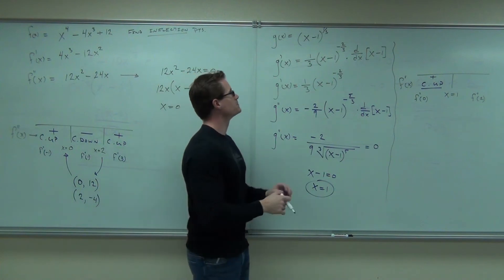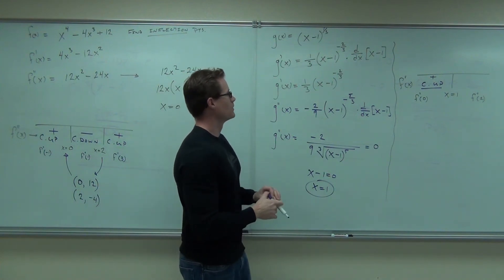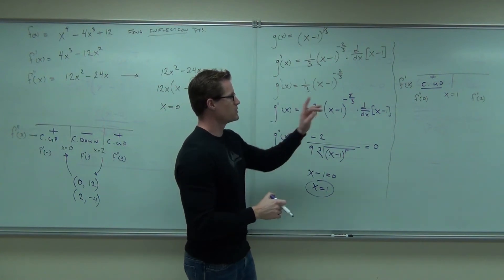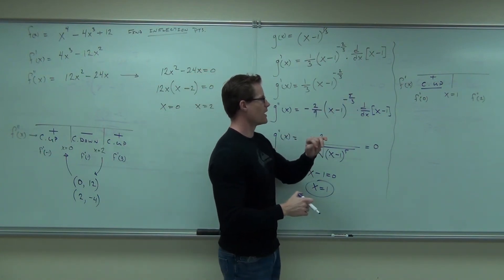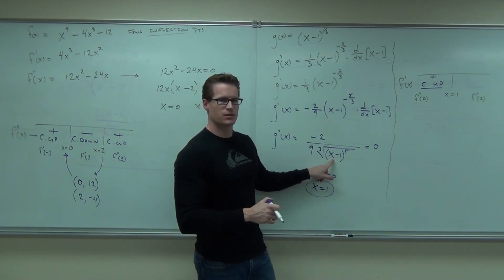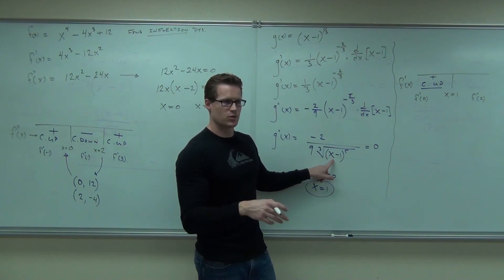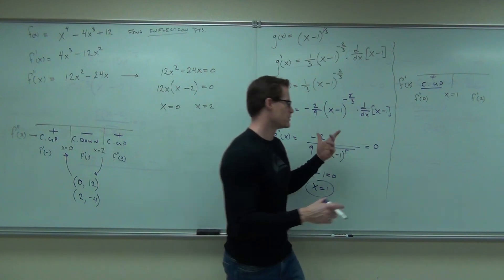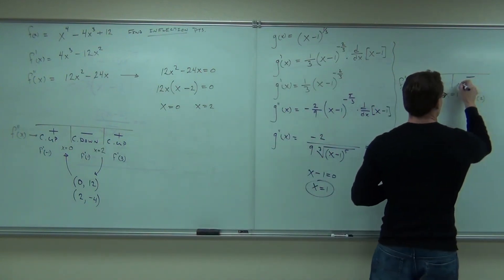Now let's do the second one. If I do the second one. So f double prime of 2. Plug in 2. I gave you a nice number. 2 minus 1 is? That's positive. Fifth power? Cubed? Times 9? Negative over a positive? Negative. Concave down.